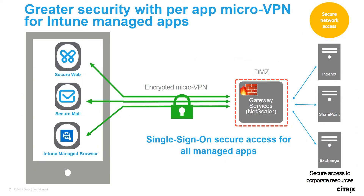EMS provides only basic VPN capabilities, which can introduce greater security risks. For example, a malware-infected app could use the VPN to access your resources behind your firewall. By adding ZenMobile MicroVPN capabilities, each application has its own secure tunnel to back-end resources. ZenMobile MicroVPN also adds single sign-on.